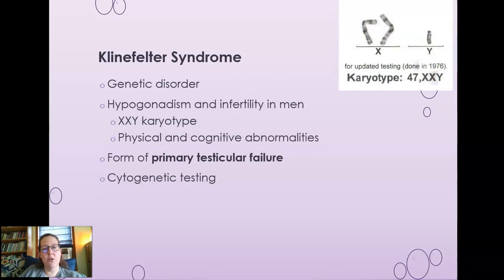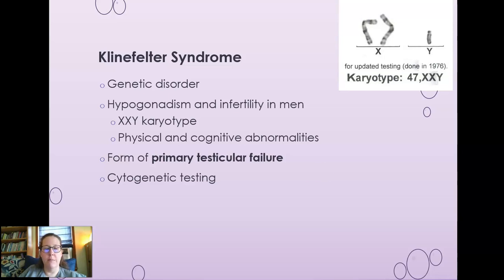Klinefelter syndrome is a genetic disorder with karyotype 47, XXY — two X chromosomes and a Y chromosome. These individuals have physical and cognitive abnormalities and it is a form of primary testicular failure. Cytogenetic testing is required to determine this, and affected individuals would be infertile.